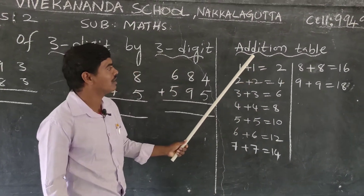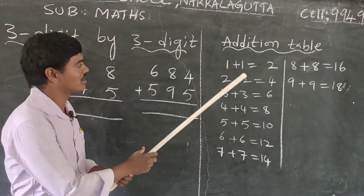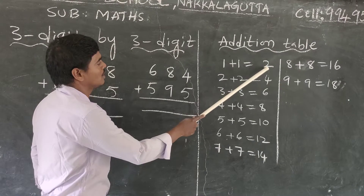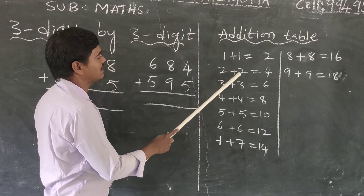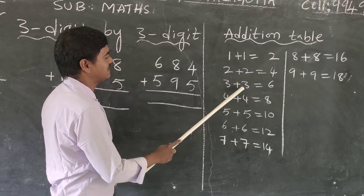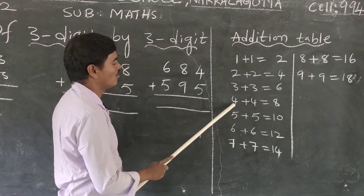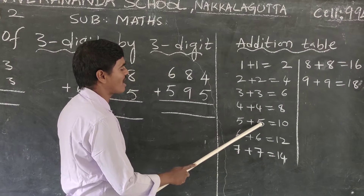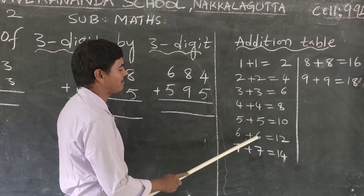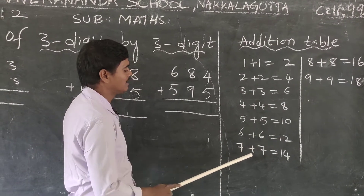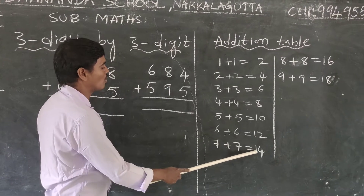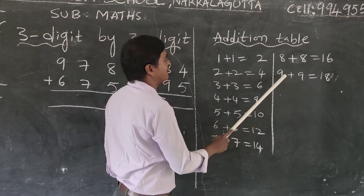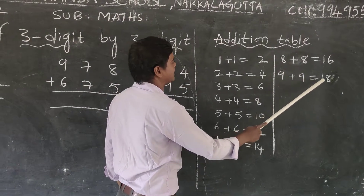Addition of three digit by three digit. Let's review: 2+2=4, 3+3=6, 4+4=8, 5+5=10, 6+6=12, 7+7=14, 8+8=16, 9+9=18.